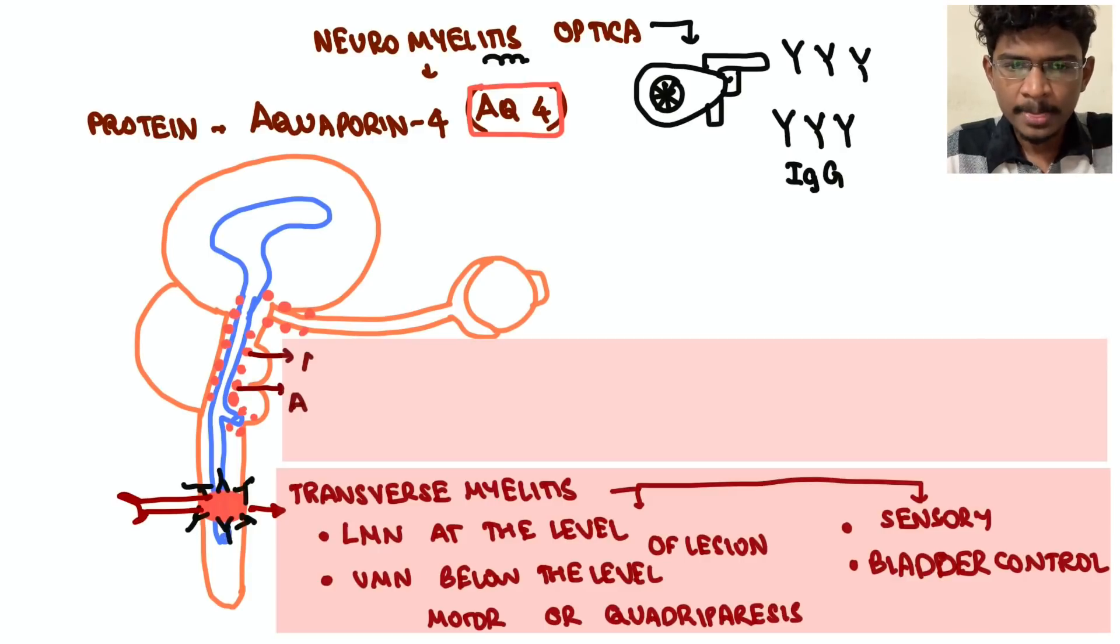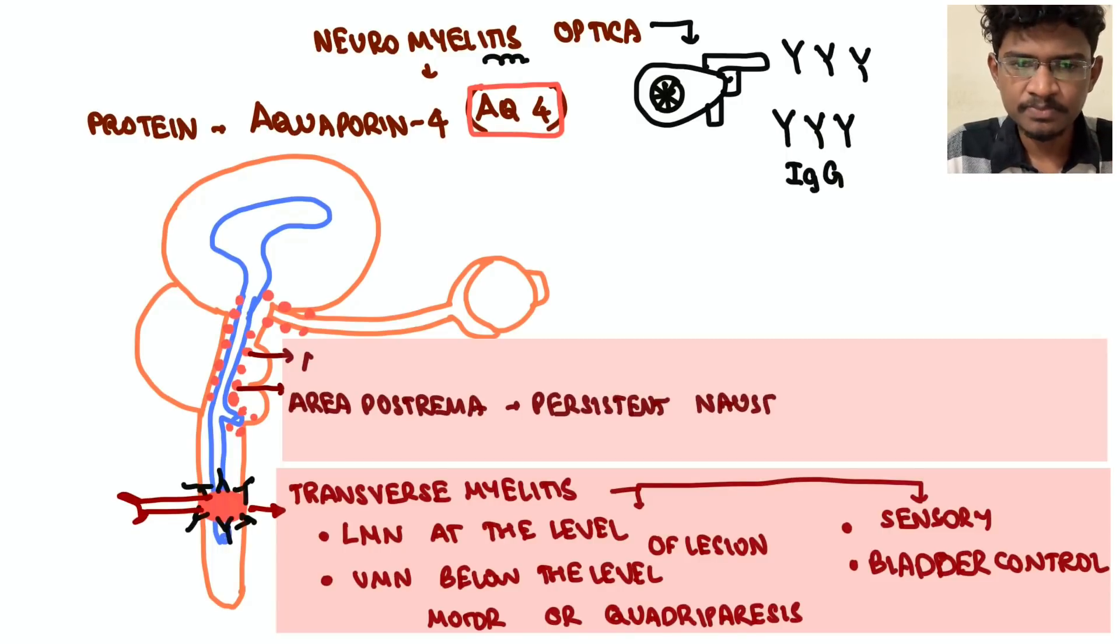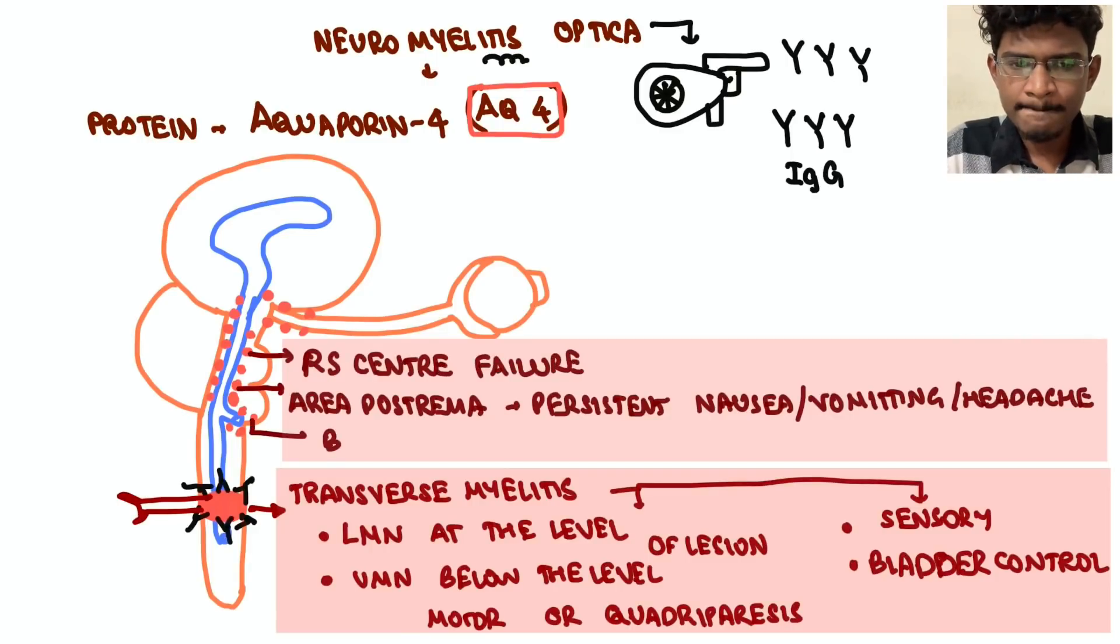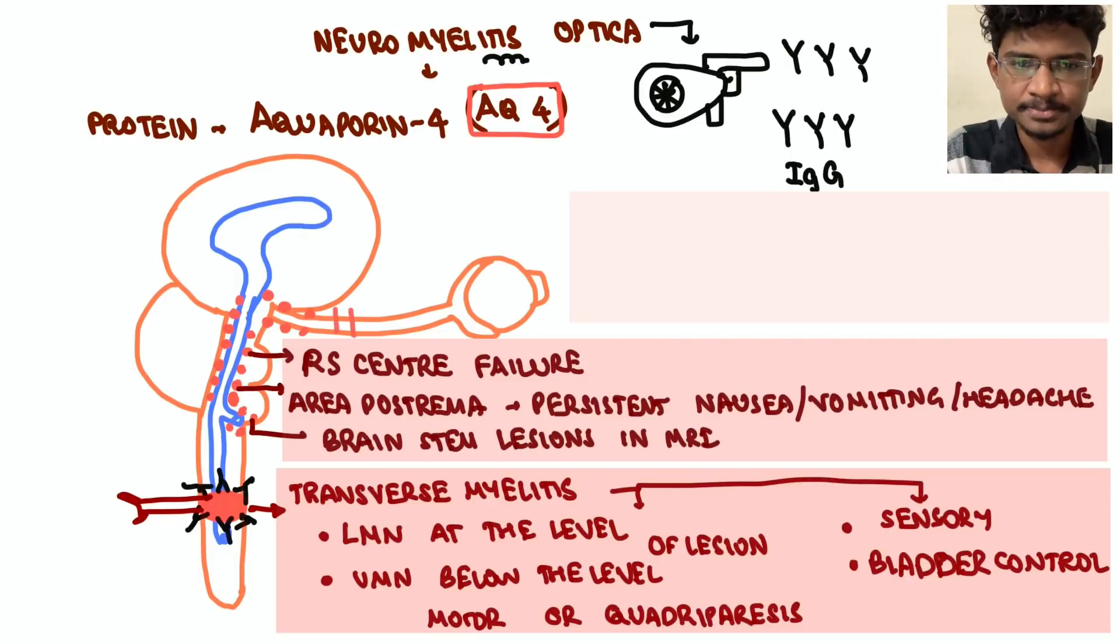Next if you see the brainstem areas, area postrema - the center for vomiting - if it is continuously irritated by this inflammation, the patient will have persistent nausea, vomiting, increased headache, increased ICP features. Next, if you see in MR you can see those diencephalic MRI lesions can be found out.